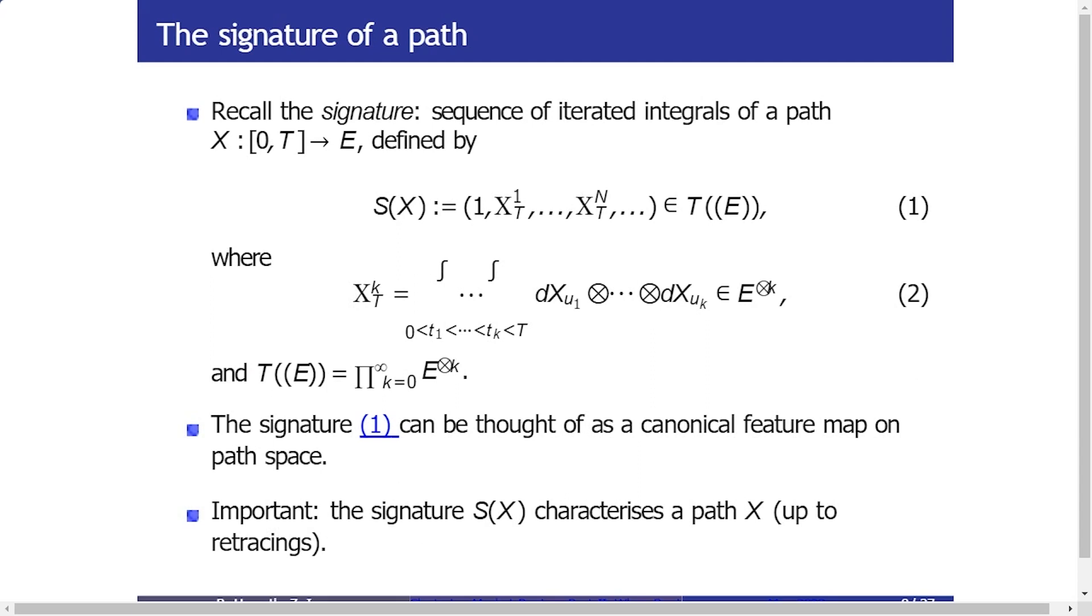The mapping which allows us to do this, this mapping that sends paths into this nice space, is called the signature mapping. I'm not going to spend too much time on this, but it is essentially a canonical way to extract all relevant features from a path. The issue with working with it in practice is that it is actually infinite dimensional. It maps paths into infinite dimensional space, so in practice, due to technical limitations, you cannot necessarily directly work with the signature.